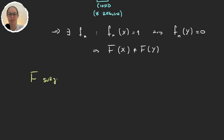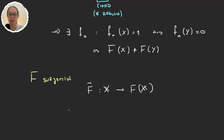To handle surjectivity, we define f̃: X → f(X) by restricting the codomain of f to its image f(X). This function is trivially surjective, so we simply redefine f to be f̃. We are now working with a bijection from X onto f(X).